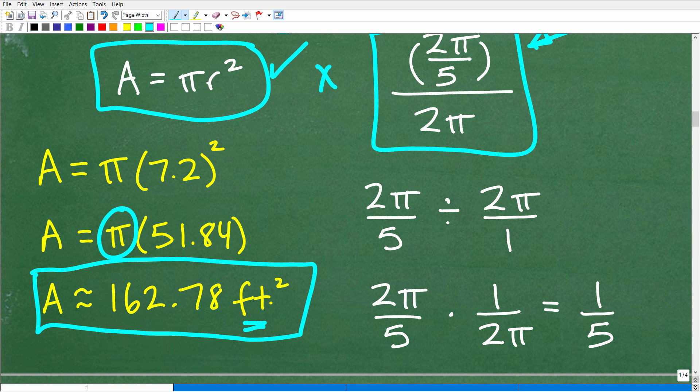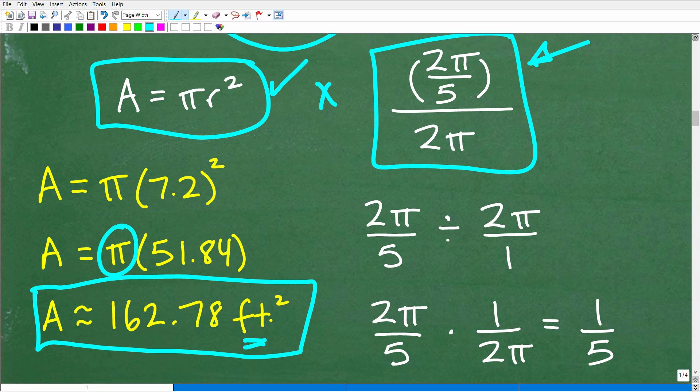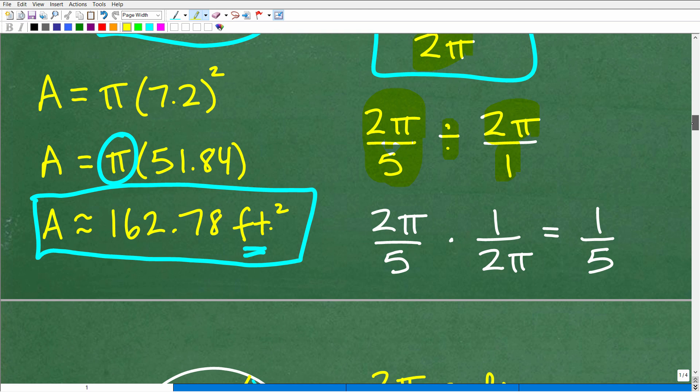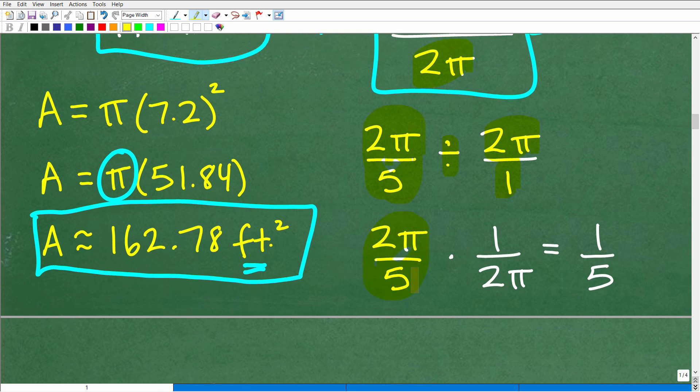Remember, the radius was in feet. So now, going back to this arc setup here that defines the sector, we have to figure out what 2π over 5 divided by 2π is. So 2π over 5 divided by 2π or 2π over 1, this works out pretty nicely here. So this is just 2π over 5, division turns into multiplication. We're going to flip this upside down to 1 over 2π. And you can see here that our 2π cross-cancels. So that's just 1 fifth.